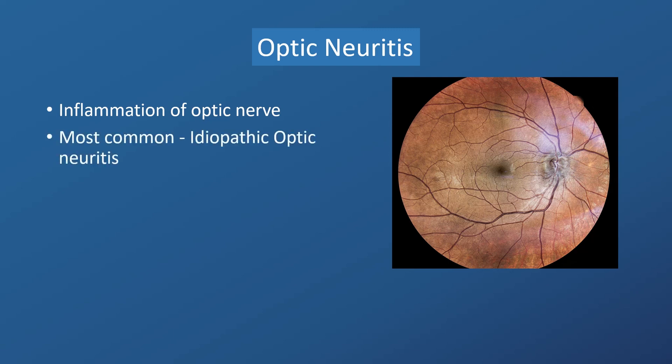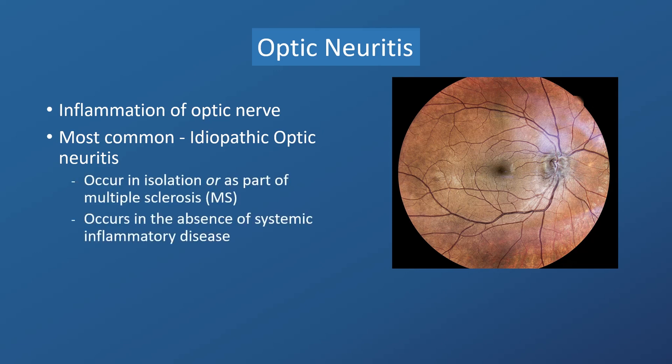By far, the most common form is idiopathic optic neuritis, which is a primary demyelinating disease, occurring in isolation or as part of multiple sclerosis. Idiopathic optic neuritis occurs in the absence of evidence of a systemic inflammatory disease. When in isolation, primary demyelinating optic neuritis is considered a forme fruste of multiple sclerosis.